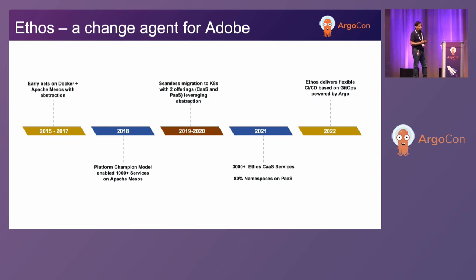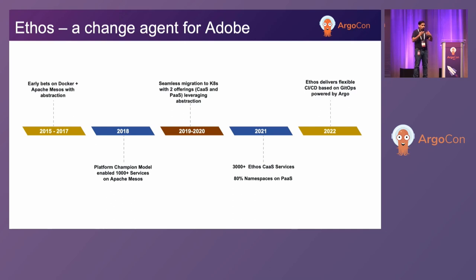Building a platform is one thing, and getting it adopted by everybody else is another thing. What did we do? We did something we called the platform champion. In pretty much every product team, we went there, we sat, we made a road trip, went to that location, sat down for a week, told them to block their sprint and come with their laptops. They left the week with one of their services working. That's how we were able to get the number of services from two digits to four digits — a thousand-plus services in a single calendar year on DCOS.